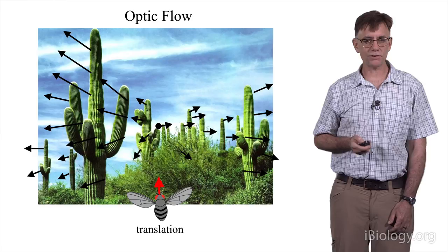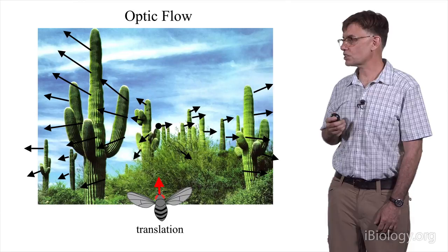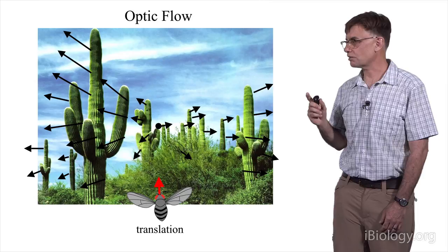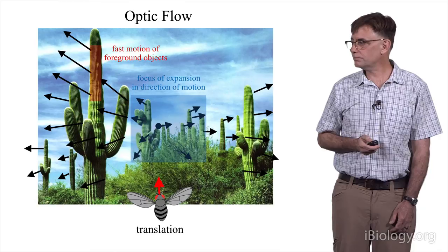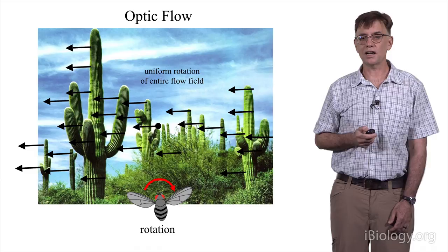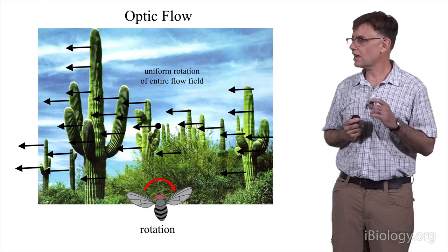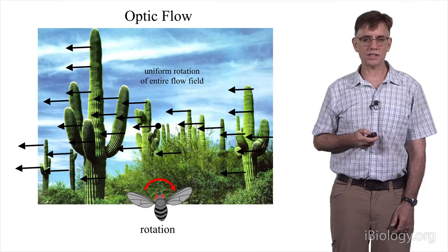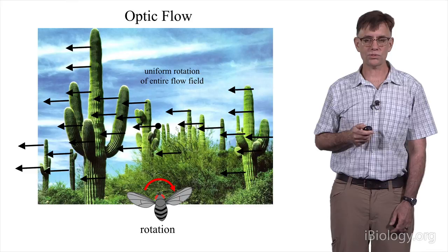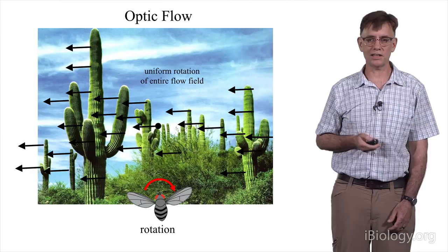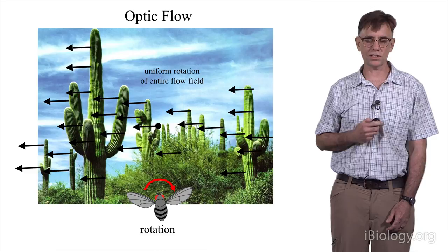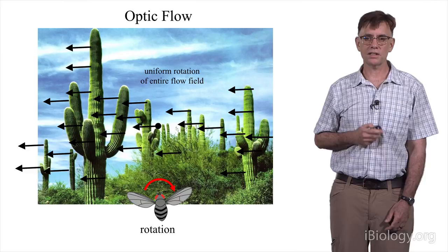Now, the useful thing about optic flow is that the pattern is different depending upon how the fly is moving through the world. So if the fly is simply translating through the world, what it's going to see is a focus of expansion directly in front of it. And nearby objects, like the nearby cactus, are going to move very quickly. Distant objects are going to move more slowly. And what we find, however, if the fly is to rotate as it's moving, then all the objects in the world are going to move around it, opposite to the pattern of rotation, all at the same speed. So if the visual system and the subsequent neural circuitry is set up, it can use these cues for flight control. If the fly sees a large pattern of rotatory optic flow, it knows that it's rotating. If it sees a focus of expansion in front of it, it knows that it's translating through the world. And these are principles that engineers use in building autonomous systems, such as self-driving cars, that can make use of optic flow.